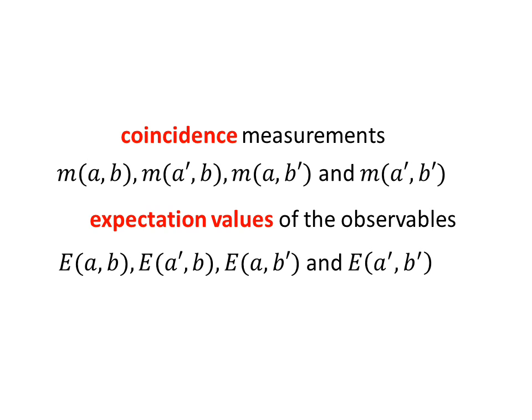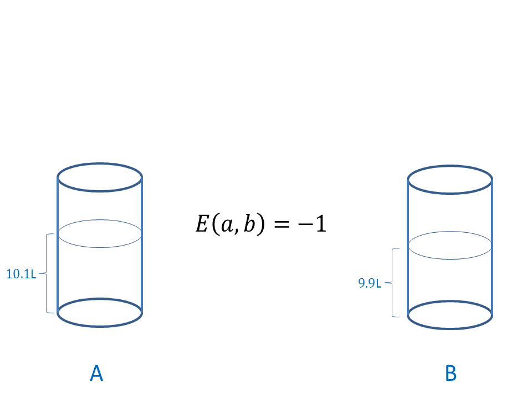Let us now carry out the experiments. First coincidence measurement: Let vessel A contain 10.1 liters. This means that vessel B contains 9.9 liters. This will give E_AB equals minus one. Note that above distribution of the 20 liters of transparent water is completely random. With the same probability we could have had 9.9 liters of water in A and 10.1 liters in B. For simplicity we will observe the former case.